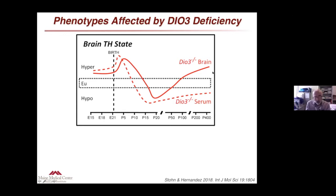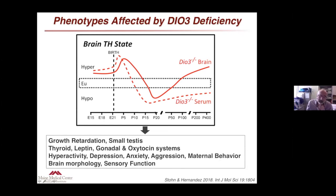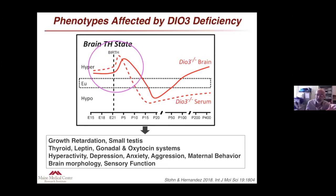These animals with DIO3 deficiency have many abnormalities: growth retardation, small testes, neuroendocrine abnormalities relating to the thyroid axis, the leptin system, the gonadal axis, and oxytocin, as well as a number of abnormal behaviors related to hyperactivity, depression, anxiety, aggression, and maternal behavior — a very rich phenotype mostly affecting the brain. Importantly, if you inhibit this enzyme in adulthood only, most phenotypes are gone, suggesting most of these abnormalities are of developmental origin. Some are similar to those observed in the neonatal T4 model papers from 40 years ago.